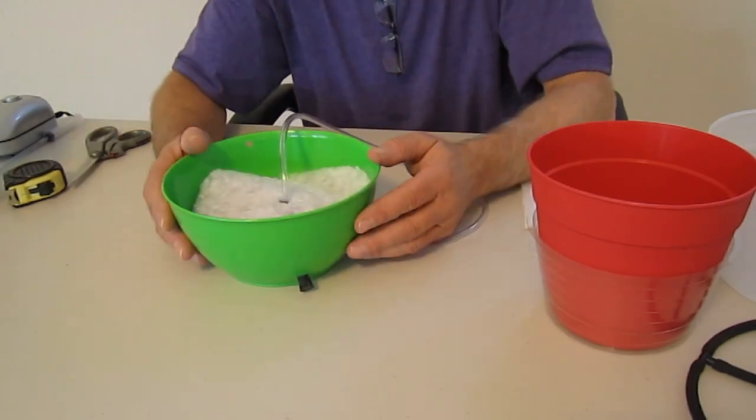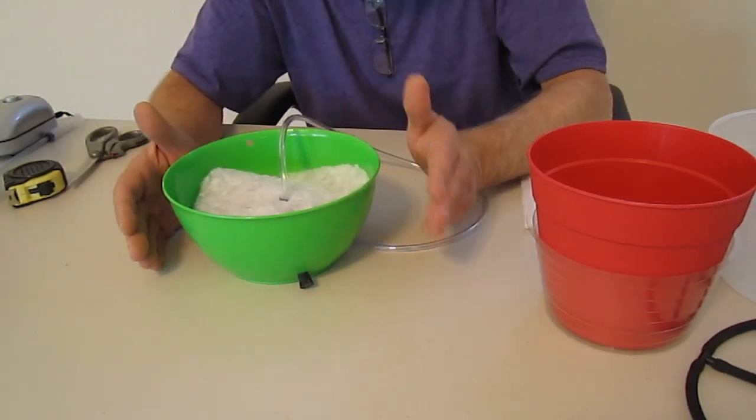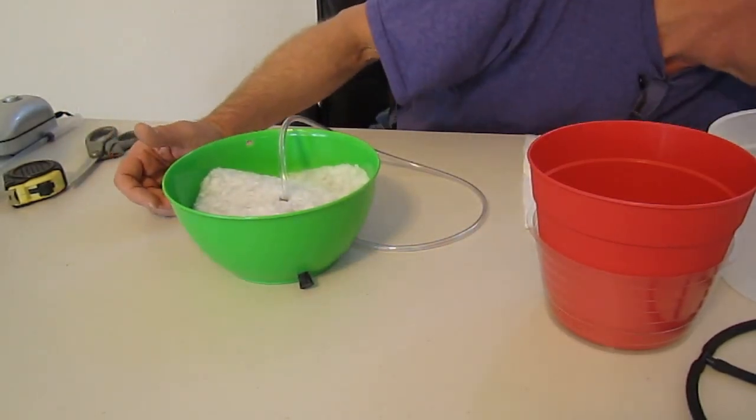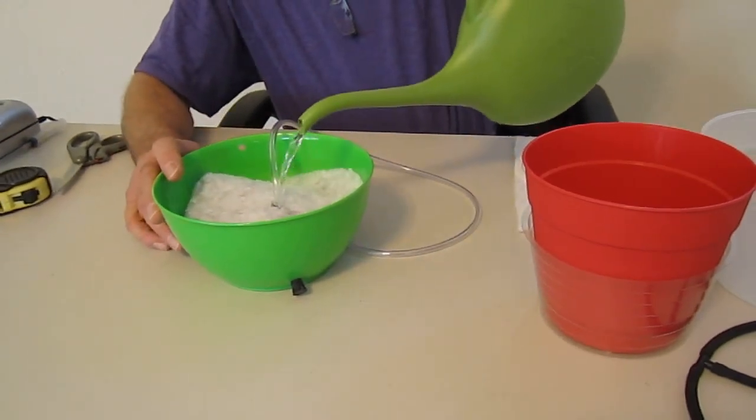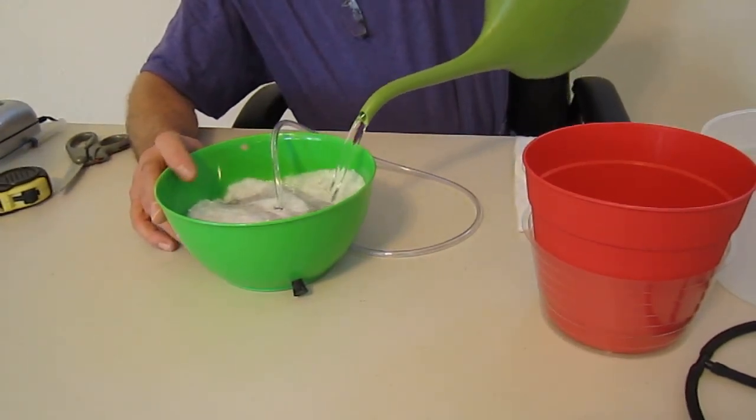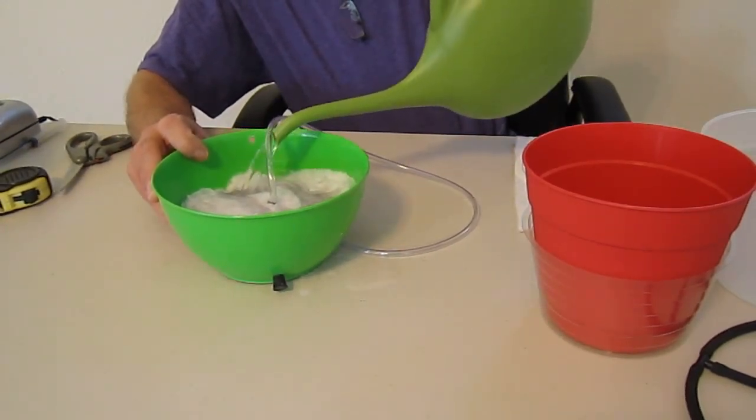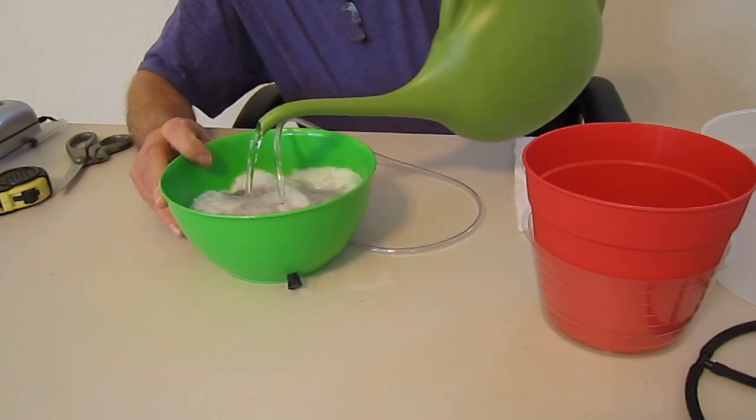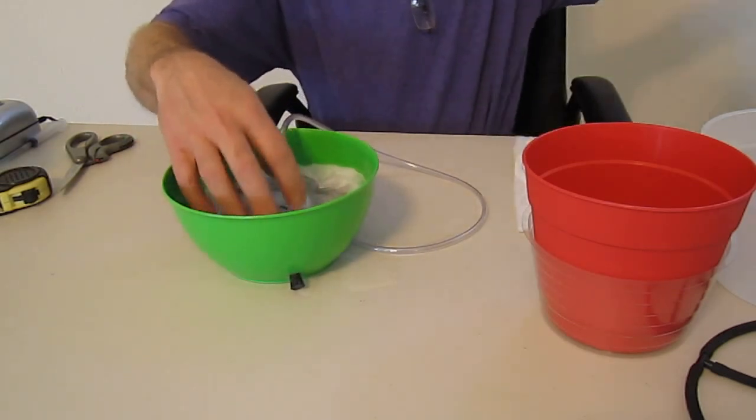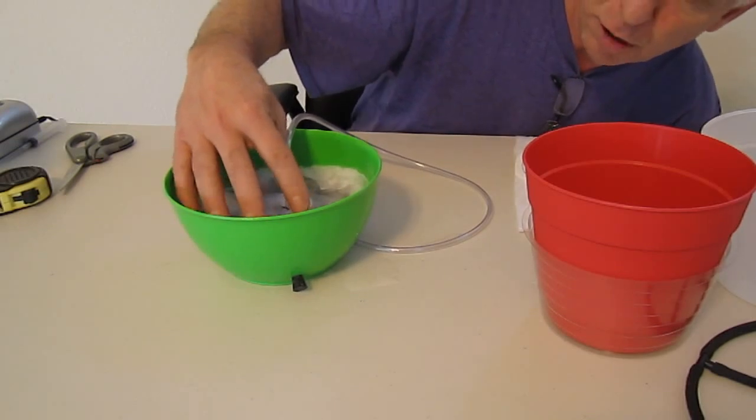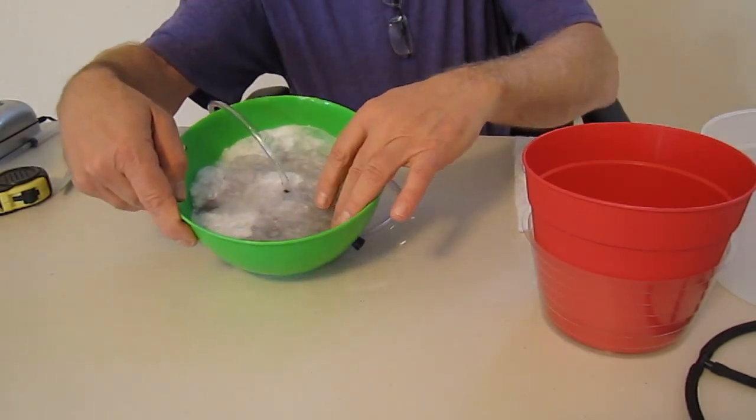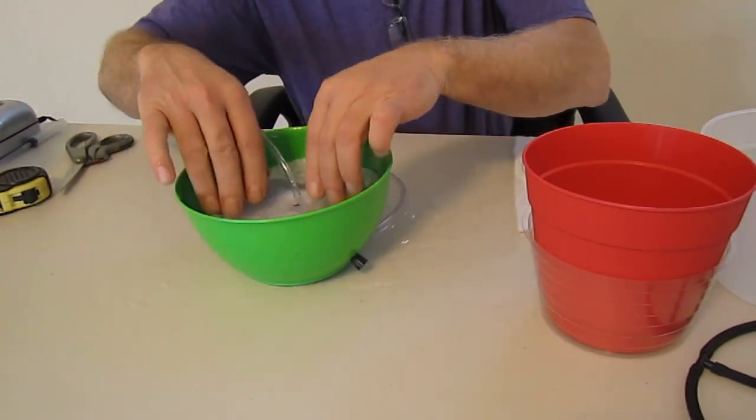Now at this point, what you want to do is what I like to do, I call charging the system. What I'm going to do is I'm going to take some water and go ahead and saturate this. And I want to bring that water level up even with the top of the grow stones and the sure-to-grow pad. So what it's going to look like is sopping wet like this.